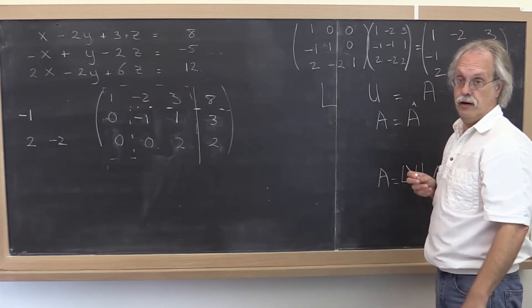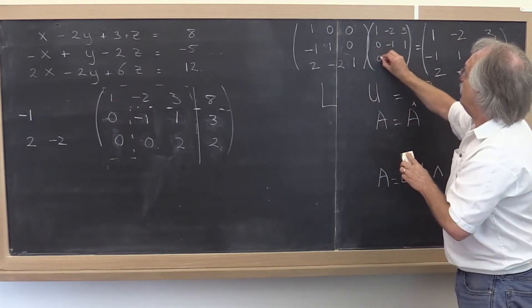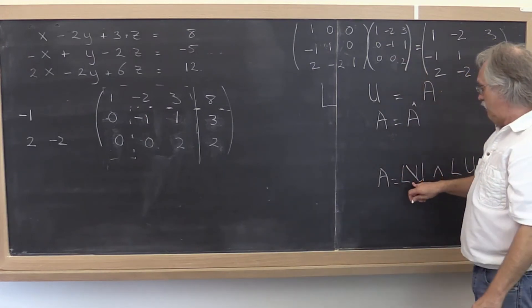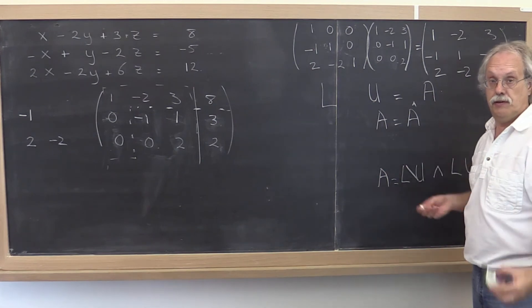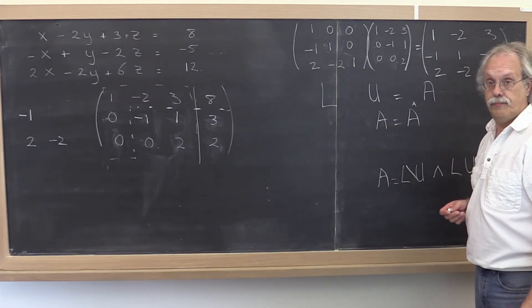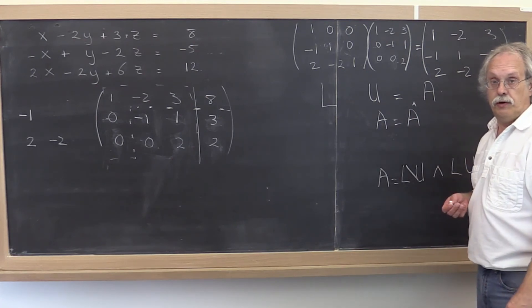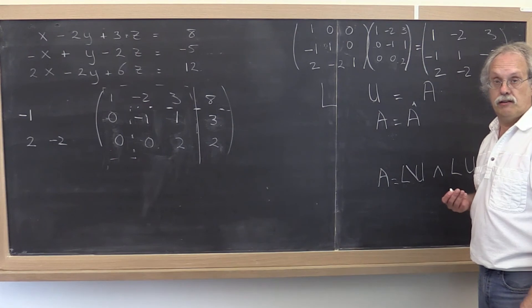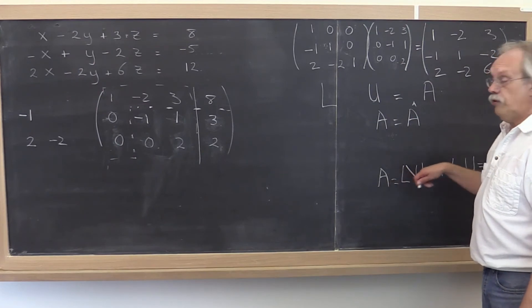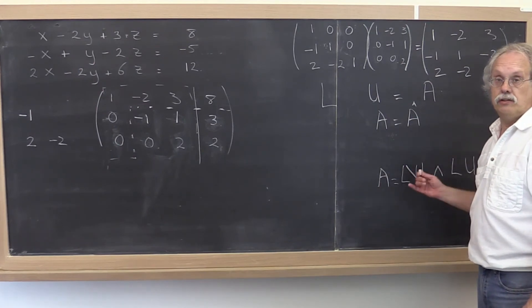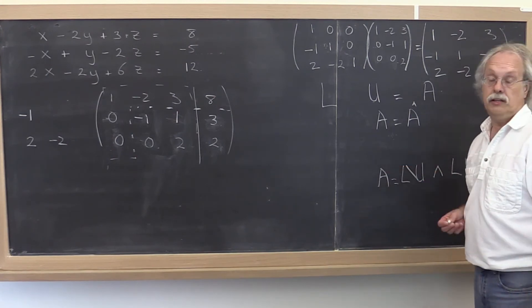Well, notice that you could take these entries here and put them right there and in effect store L and U both in the same matrix by virtue of the fact that you know that the diagonal elements of L are 1 and therefore you don't need to store them. And what that means is that you can take the result of computing the LU factorization and you can have it overwrite the original matrix so that you don't need additional space for the result. And that's typically how it's done. People who do numerical computing are typically very stingy with memory.